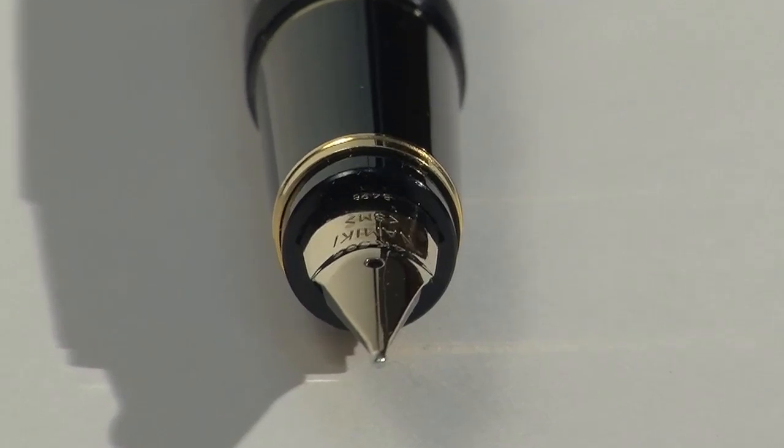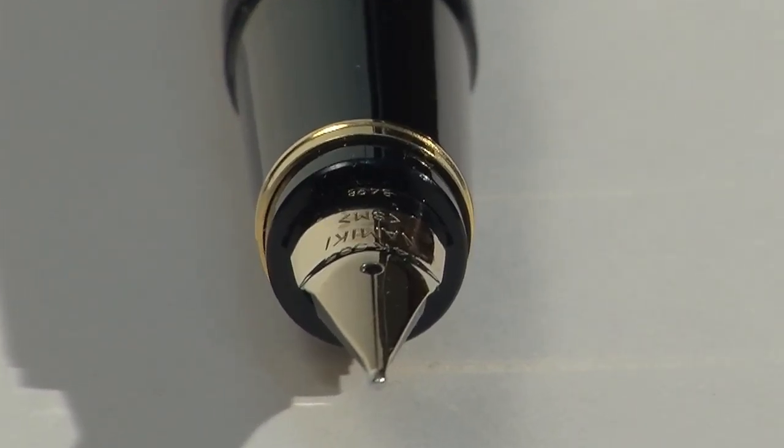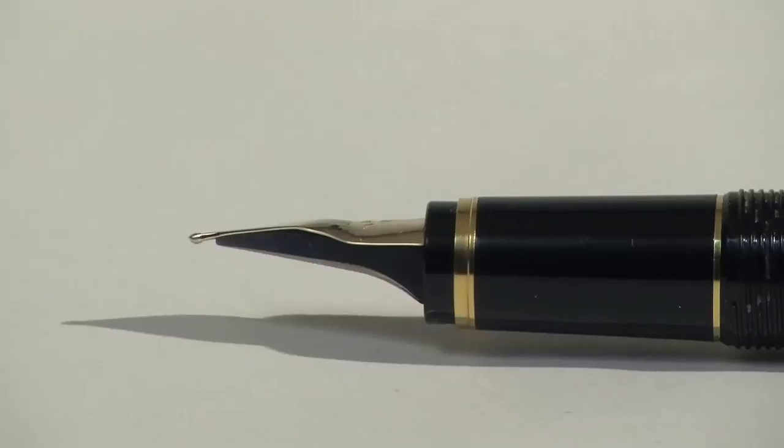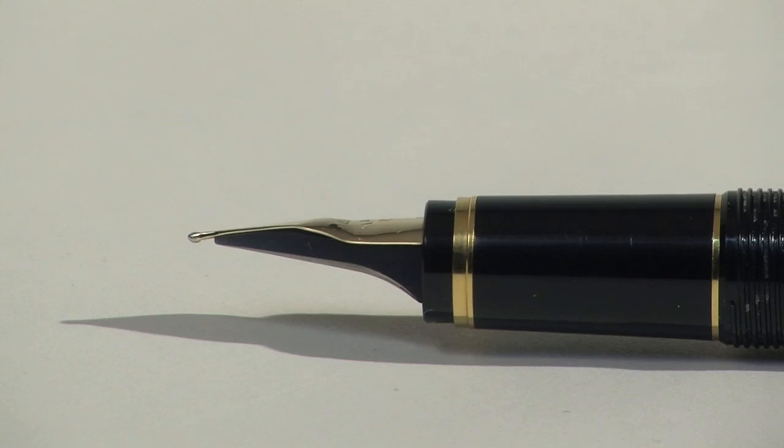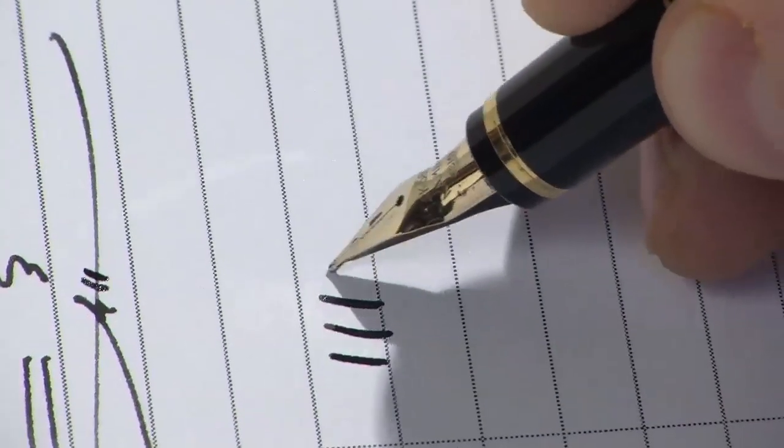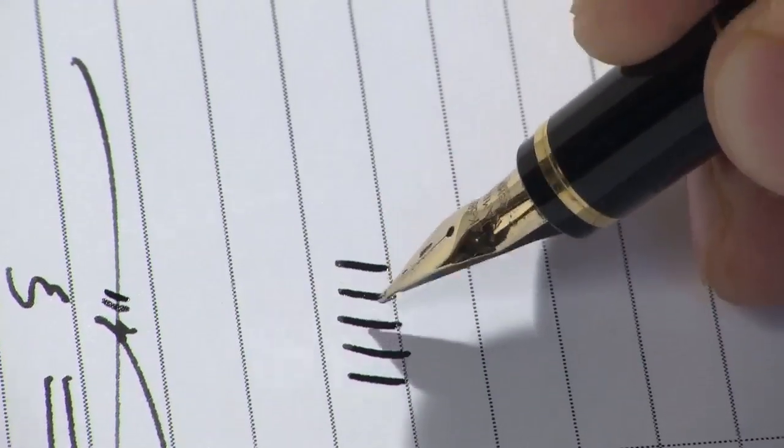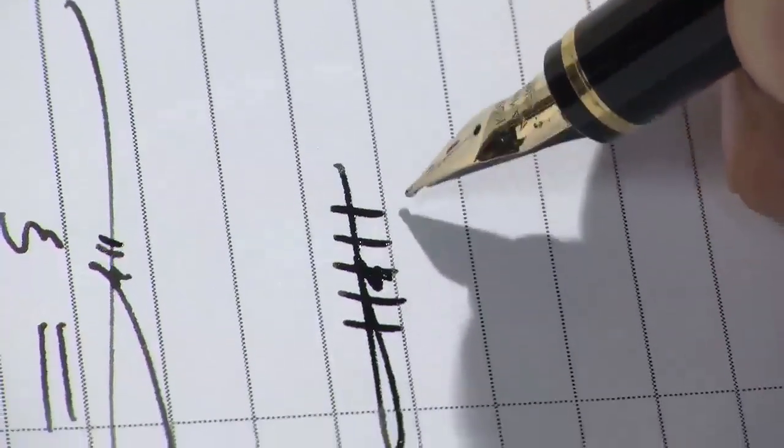The nib, clearly the most unique feature of this pen, is made from 14-carat gold. The nib's design features a kind of humped-back shape that could once be found on some 19th century calligraphic nibs. I assume that this is to aid in the nib's flexibility.